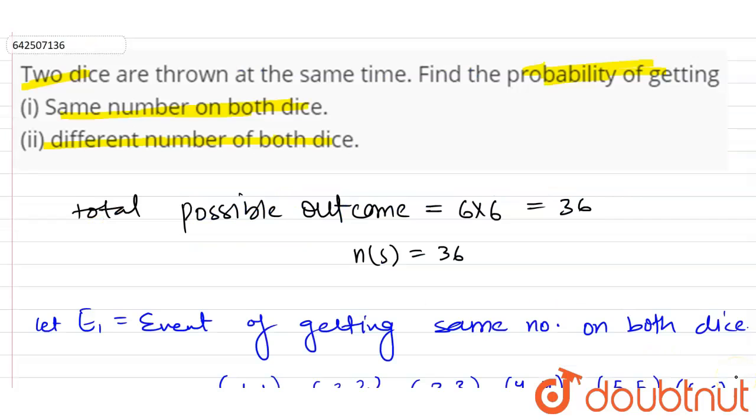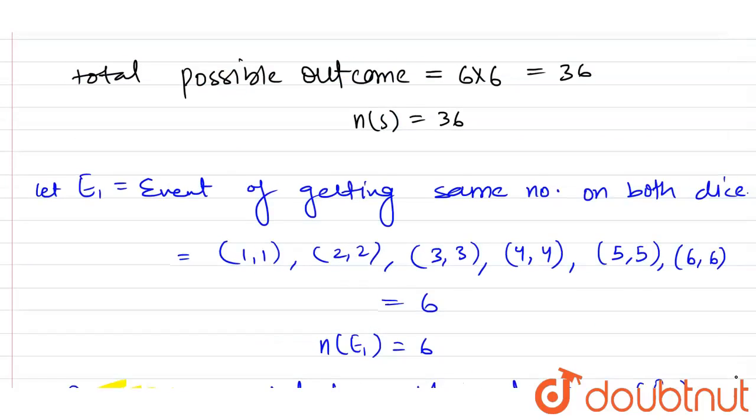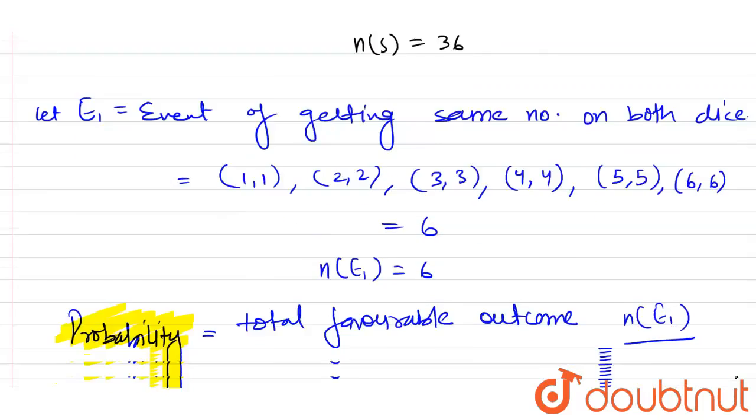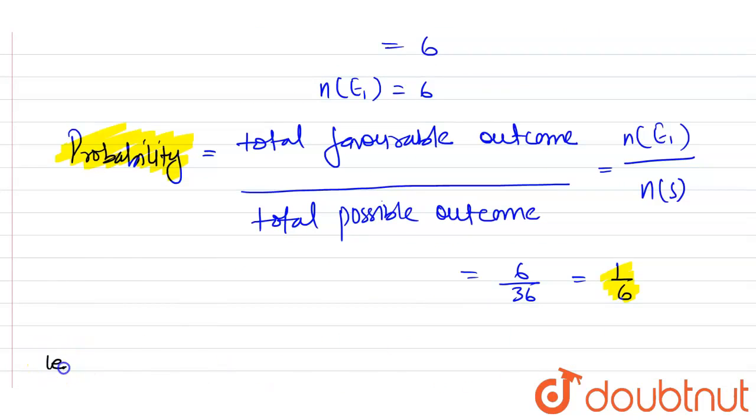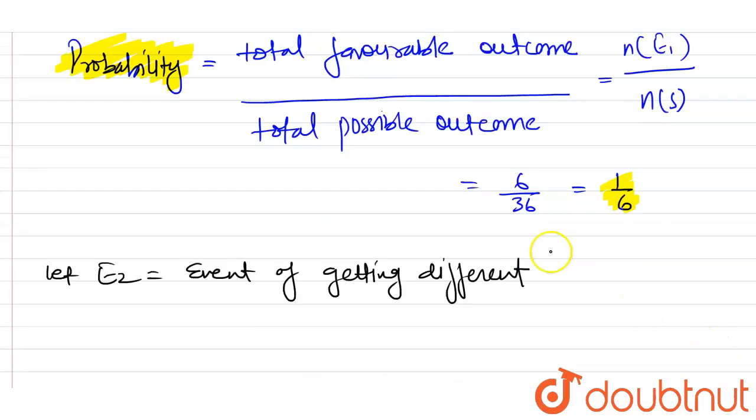Now, the second part is asking the probability of getting different numbers on both dice. So we know that the event of getting same number on both dice is 6. So let E2 be the event of getting different numbers on both dice.